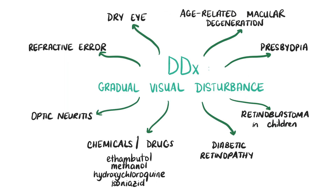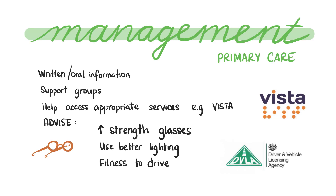Investigations are usually performed by an optometrist, so in suspected cataracts refer for full investigations including a slit lamp examination to physically examine the lens, plus a glare vision test. This slide summarises some differential diagnoses for gradual visual disturbance taken from NICE CKS. In the early stages, cataracts can be managed in primary care with conservative measures such as increasing the strength of glasses and encouraging use of brighter lighting.